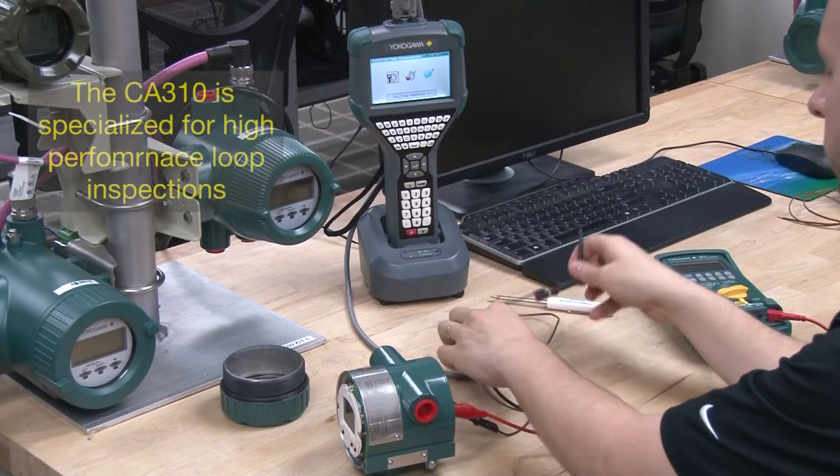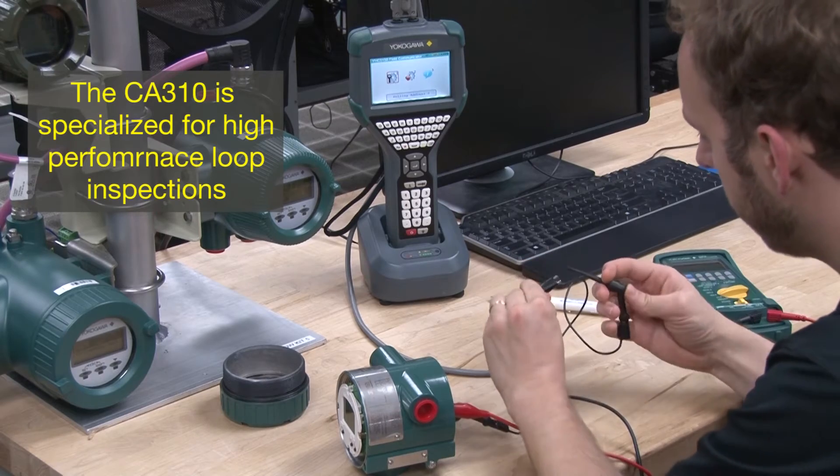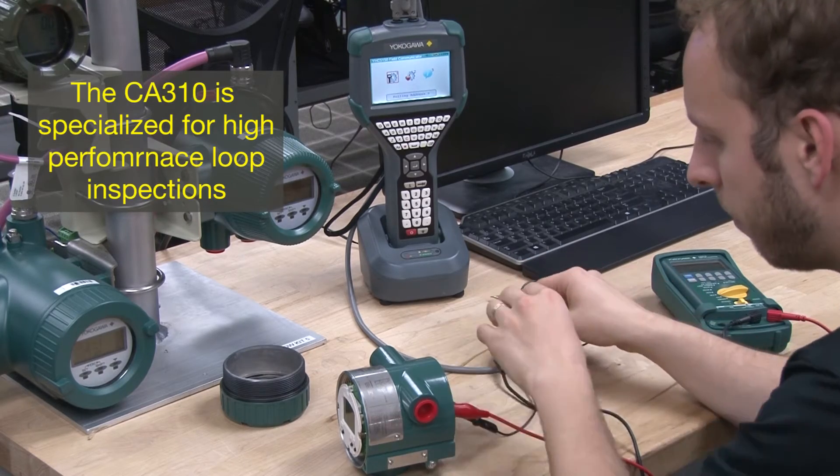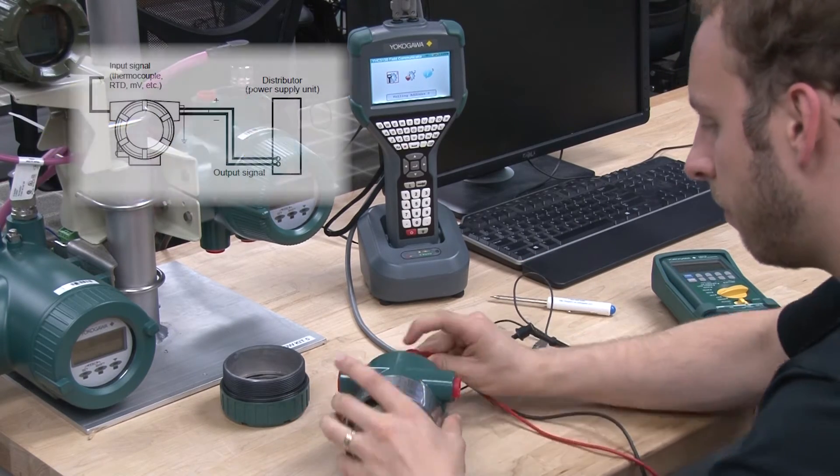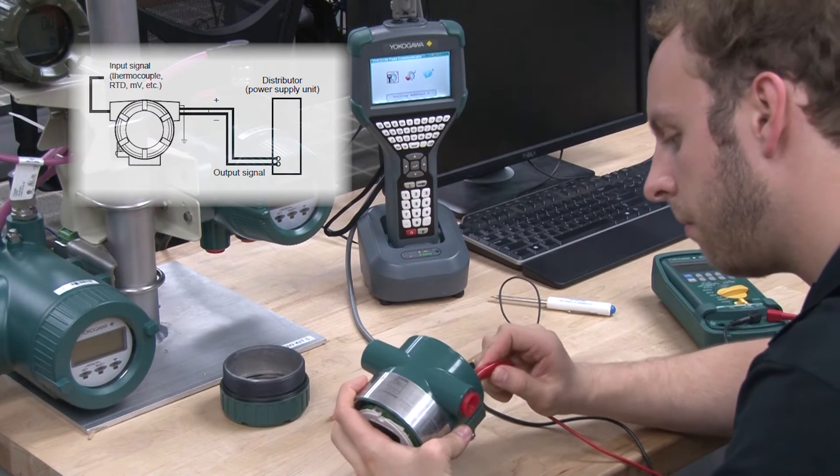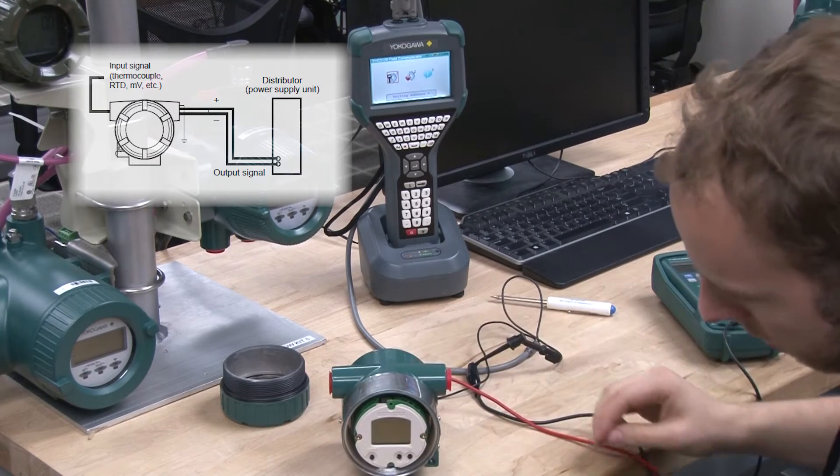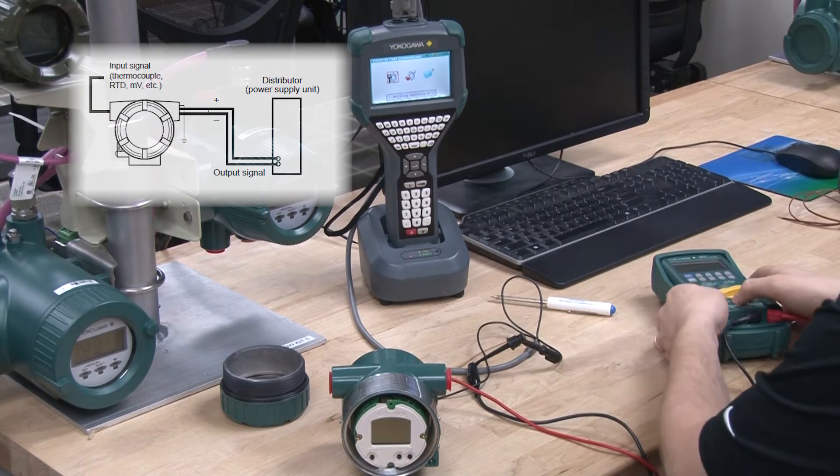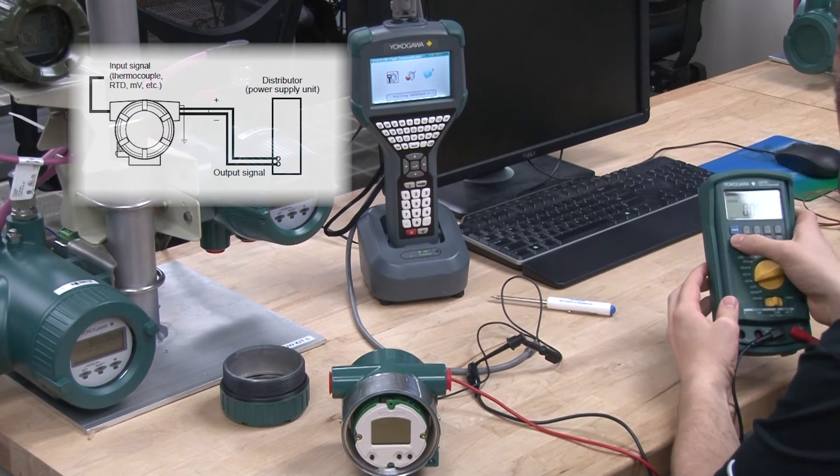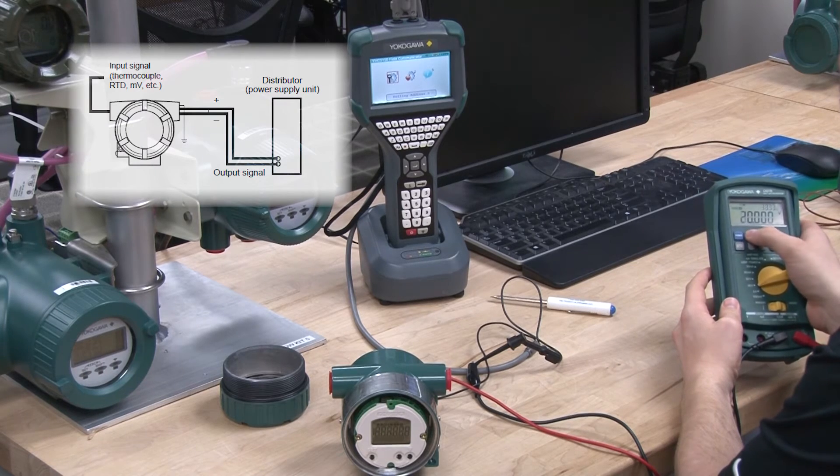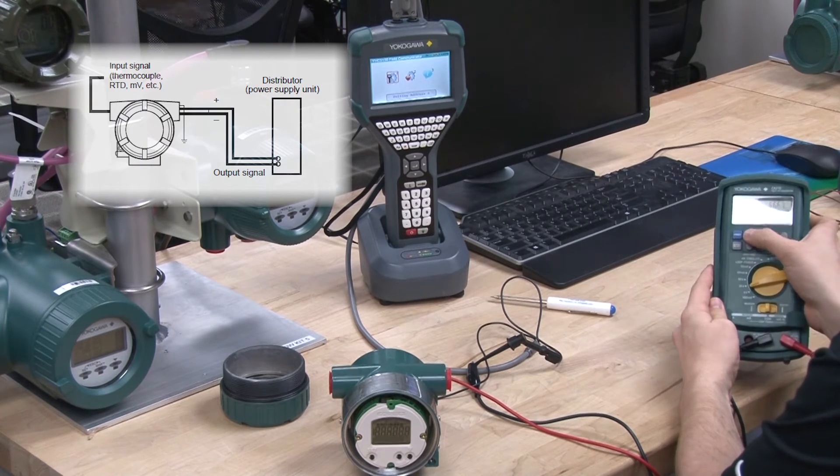The CA310 voltage and current simulate model is specialized for high performance loop inspection capable of executing a loop check by simulating a transmitter syncing the current signal from its external source. DC milliamp signals can be measured by supplying power to a transmitter from a 24 volts DC power supply.